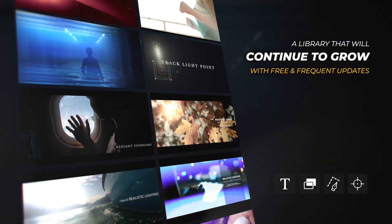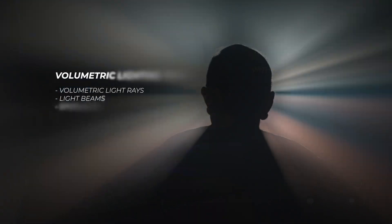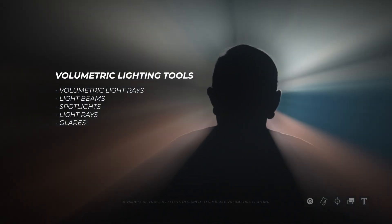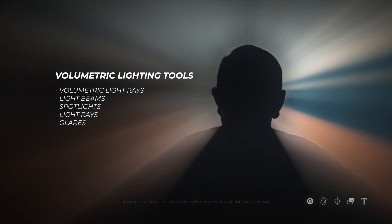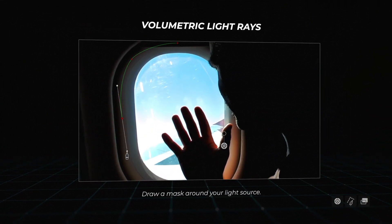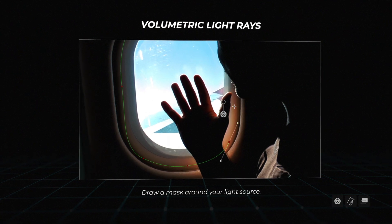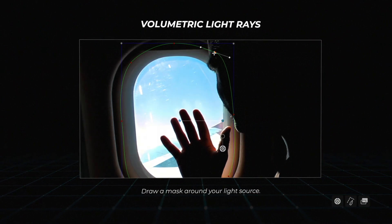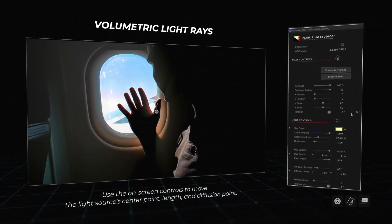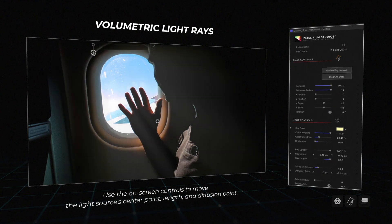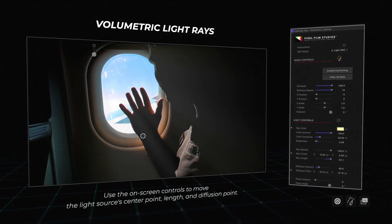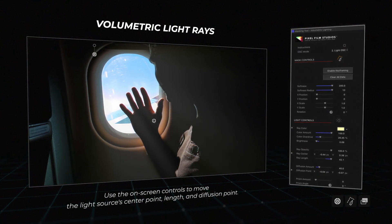This package includes volumetric lighting tools. With volumetric light rays, users simply create a mask around the light source and use the on-screen controls to move the light source's center point, length, and diffusion point.